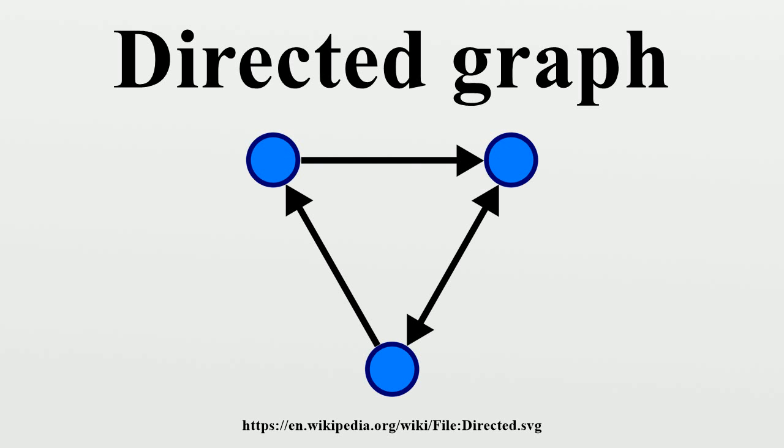Any directed graph constructed this way is called an oriented graph. Among directed graphs, the oriented graphs are the ones that have no two-cycles.